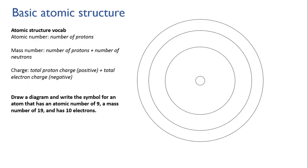We're going to work through this bit by bit. We need to know the number of protons, the number of neutrons, and the number of electrons to draw this diagram. We know that the atomic number is 9, and the atomic number equals the number of protons. We also know that the mass number is 19, and that equals protons plus neutrons.